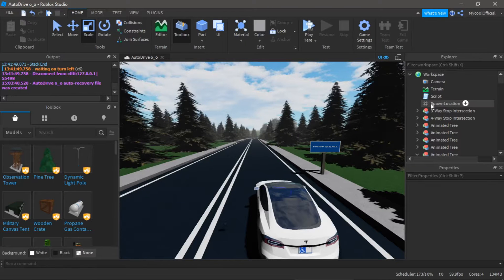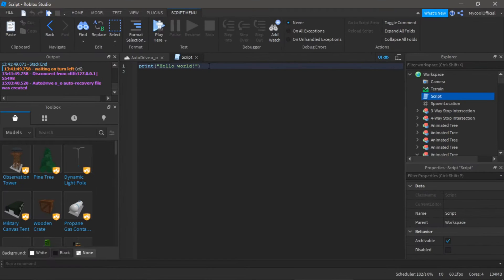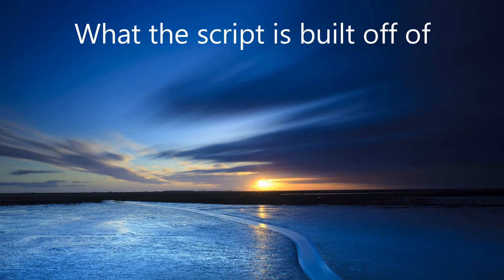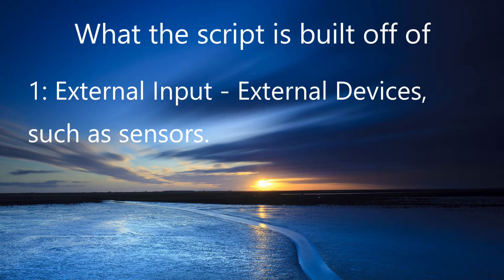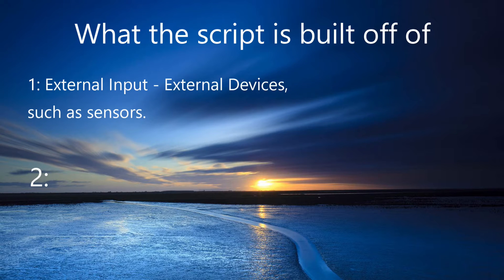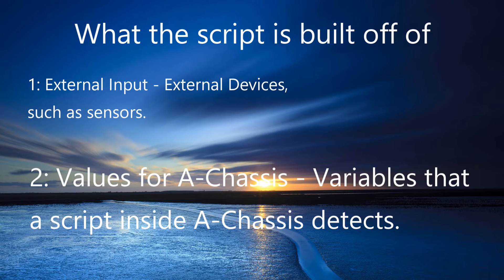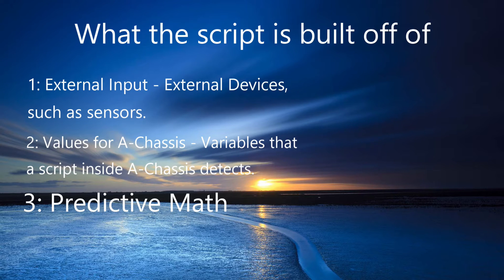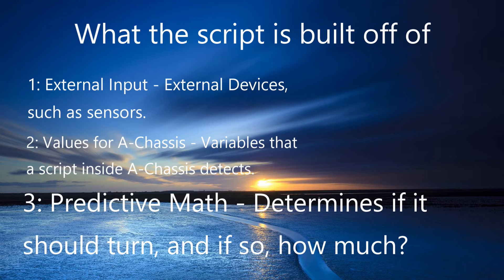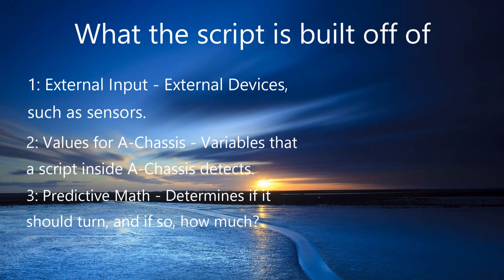My script is built off of three things. Number one: external input — it needs this in order to detect the line so it knows when it should turn and how much. Two: it needs values that go into a chassis. This script can't control a chassis directly, so we need external values outside of a chassis and a script inside that makes the wheels turn. Three: it needs to do the math and then determine whether or not it will turn. It's that simple.